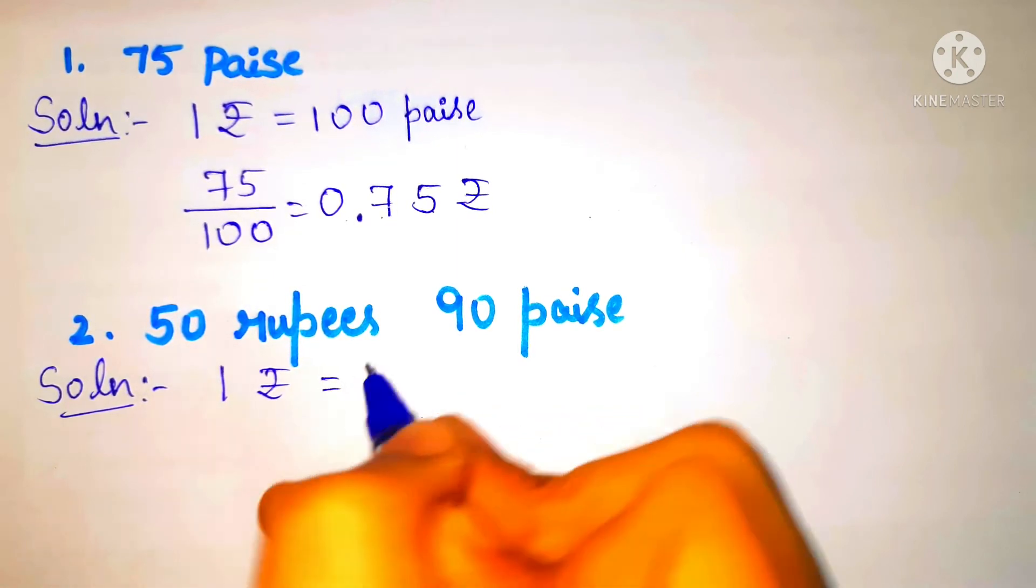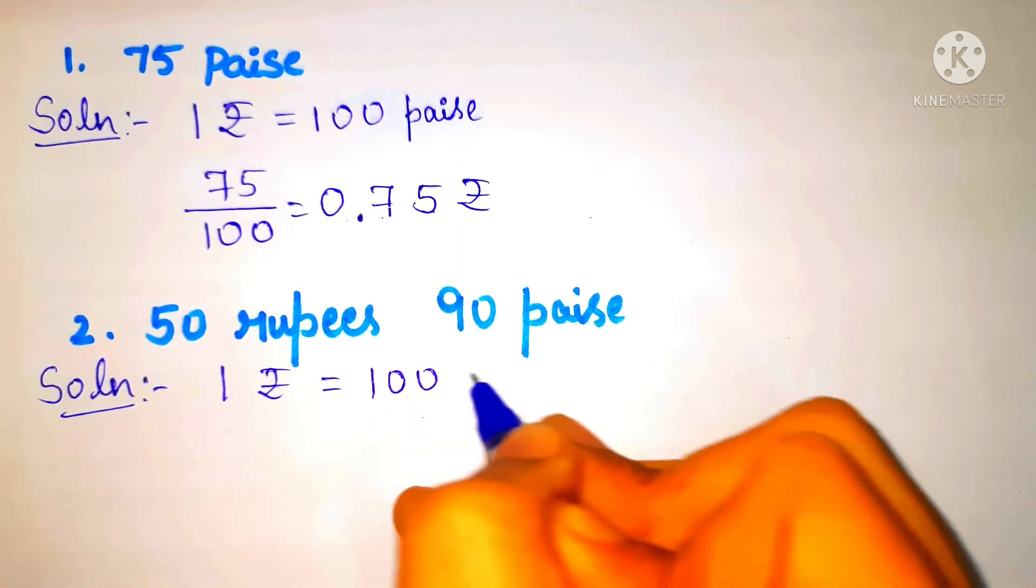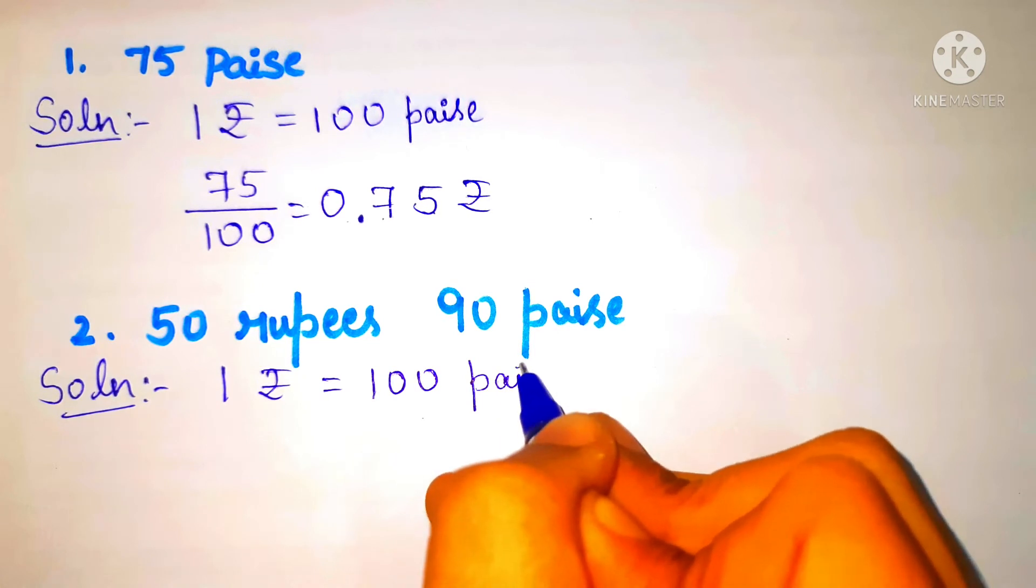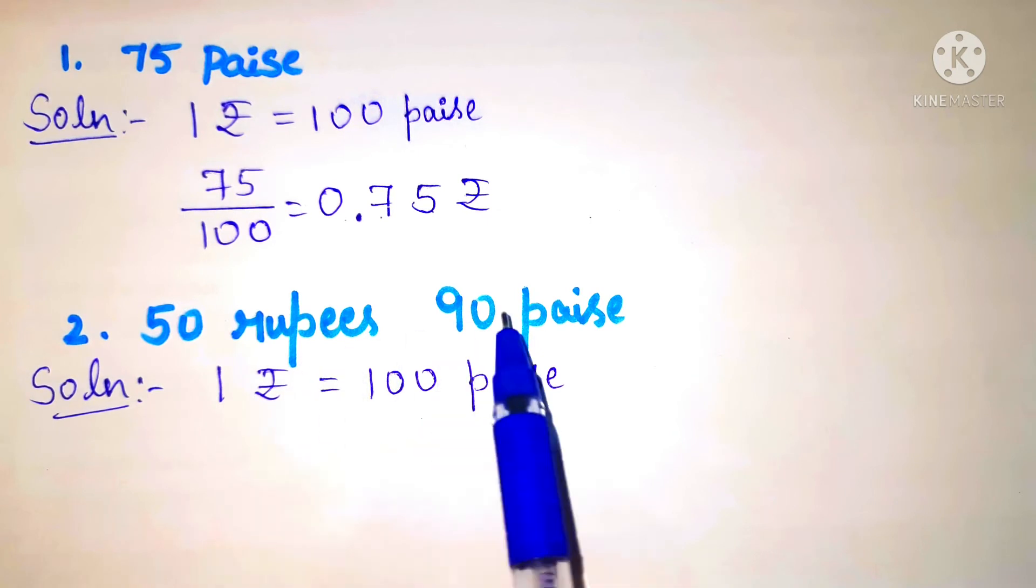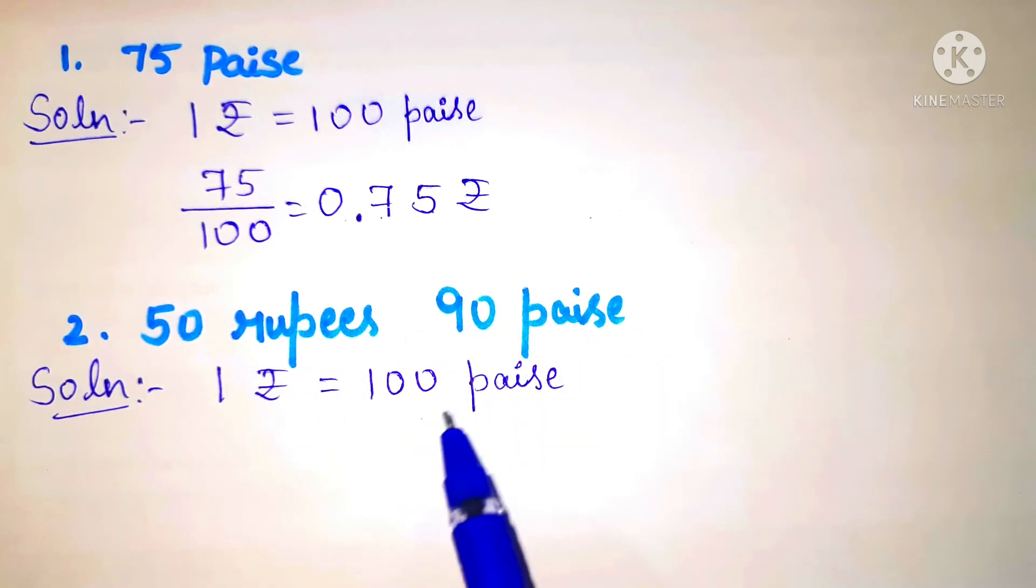1 rupee is equal to 100 paise. Now we have to convert 50 rupees and 90 paise into rupees.